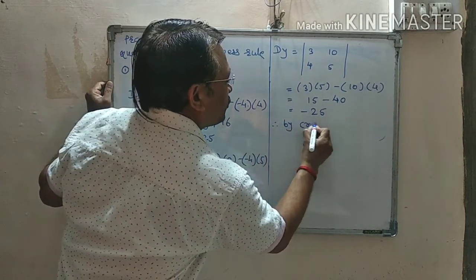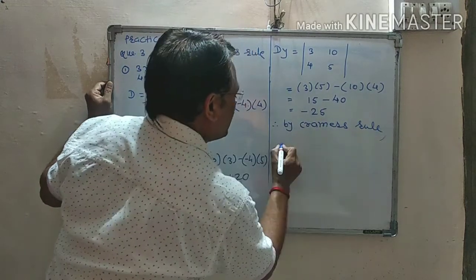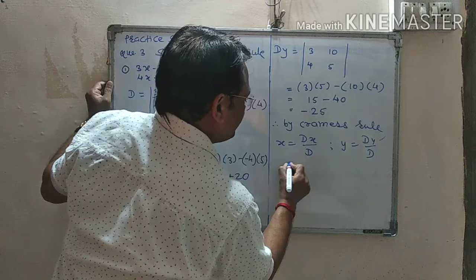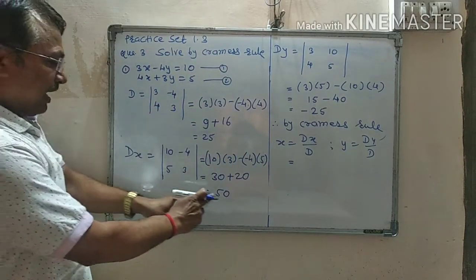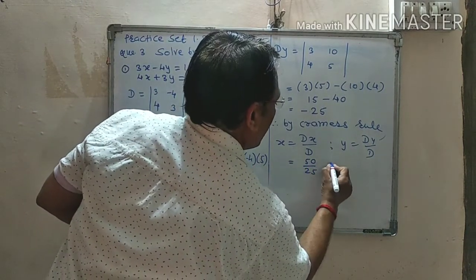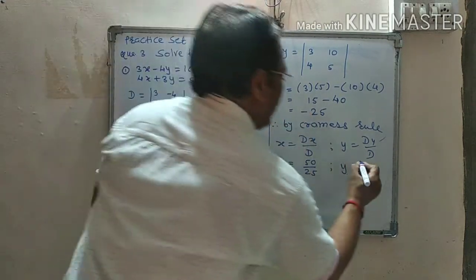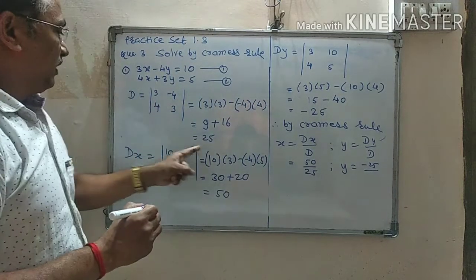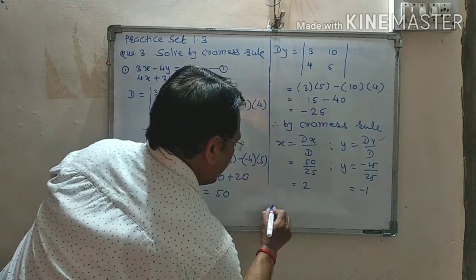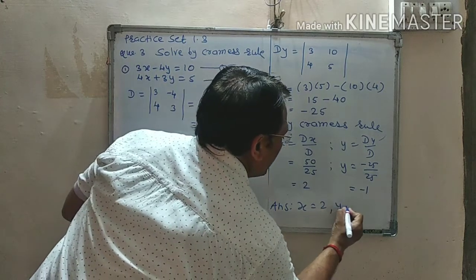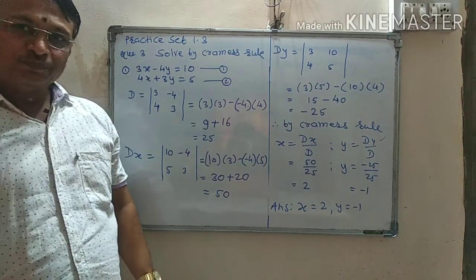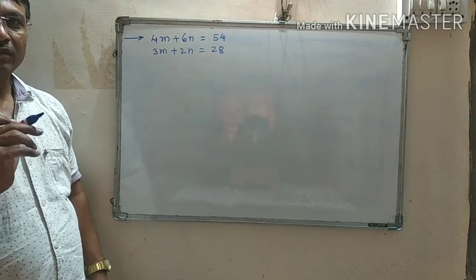By Cramer's Rule, the formula is: x is equal to DX upon D and y is equal to DY upon D. M is equal to, DM we got is minus 60, no, it is equal to DX is 50 upon D's value which is 25. And y's value: DY, DY is minus 25 upon D which is 25. Therefore it is equal to 2, and this is minus 1. Therefore the answer is: x's value we got is 2 and y's value we got is minus 1. In this way, by Cramer's Rule, we can solve simultaneous equations.